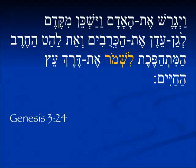Here's an example from Genesis 3:24. God has put Adam and Eve out of the garden, and He has stationed there the Keruvim and this flashing sword, Lishmor — to guard, to watch — the way to the Tree of Life.